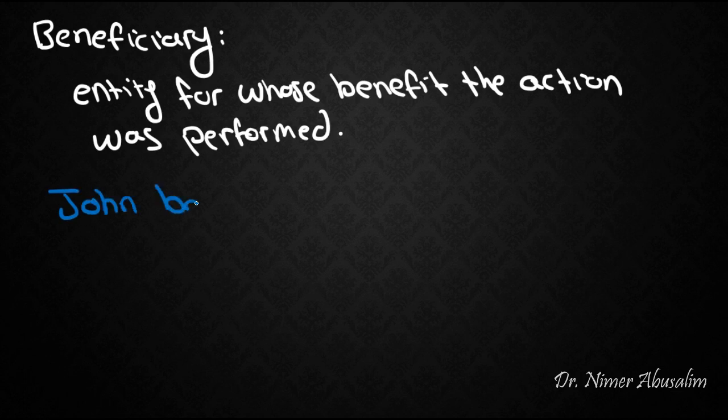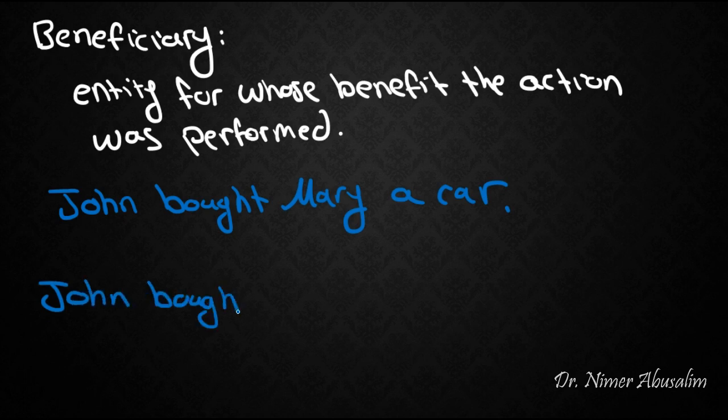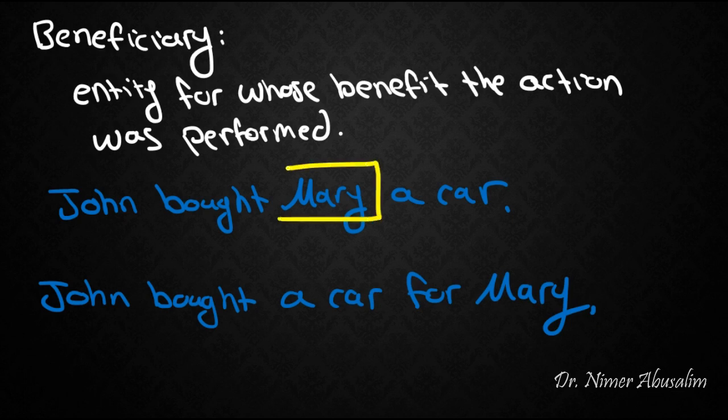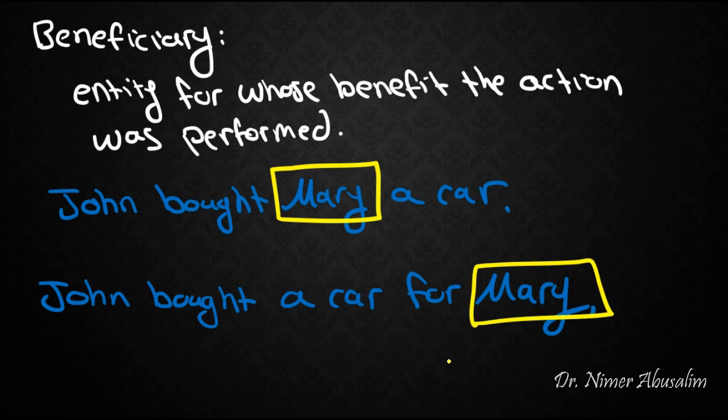Next up we have the beneficiary, which is the entity for whose benefit the action was performed. For example, 'John bought Mary a car' or 'John bought a car for Mary.' Who is benefiting from this action, the action of buying? Mary is benefiting from this, so Mary here is the beneficiary.